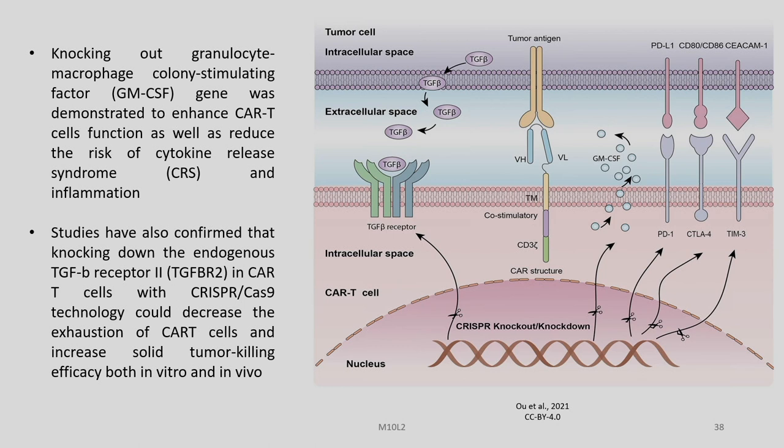Knocking out the granulocyte-macrophage colony-stimulating factor (GM-CSF) gene was demonstrated to enhance CAR T-cell functions as well as reduce the risk of cytokine release syndrome and inflammation. Studies have also confirmed that knocking down the endogenous TGF-beta receptor 2 in CAR T-cells with CRISPR-Cas9 technology could decrease the exhaustion of CAR T-cells and increase solid tumor killing efficacy both in vitro and in vivo.